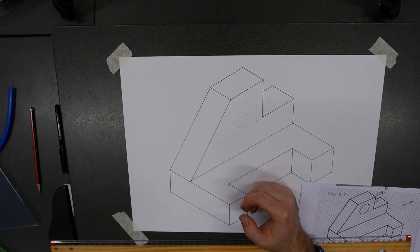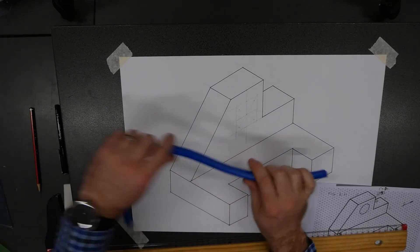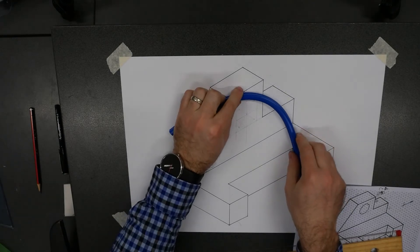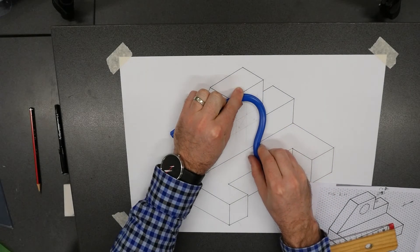You can also determine these areas and use these flexi curves. So you just locate it at the first point, and then rotate it around to the second and third points that you need.